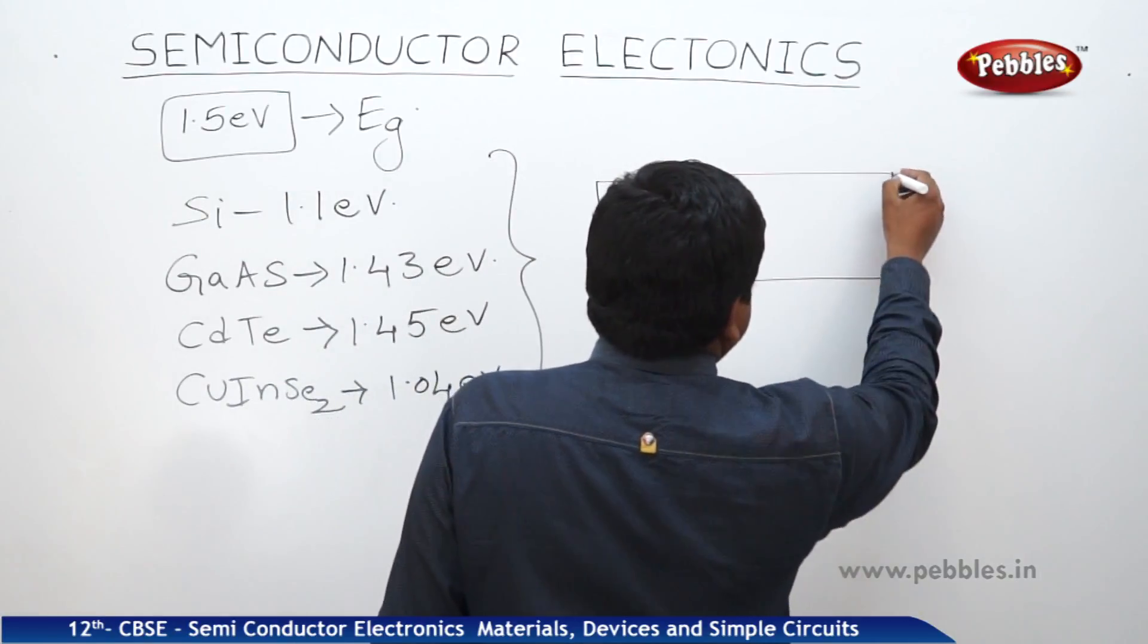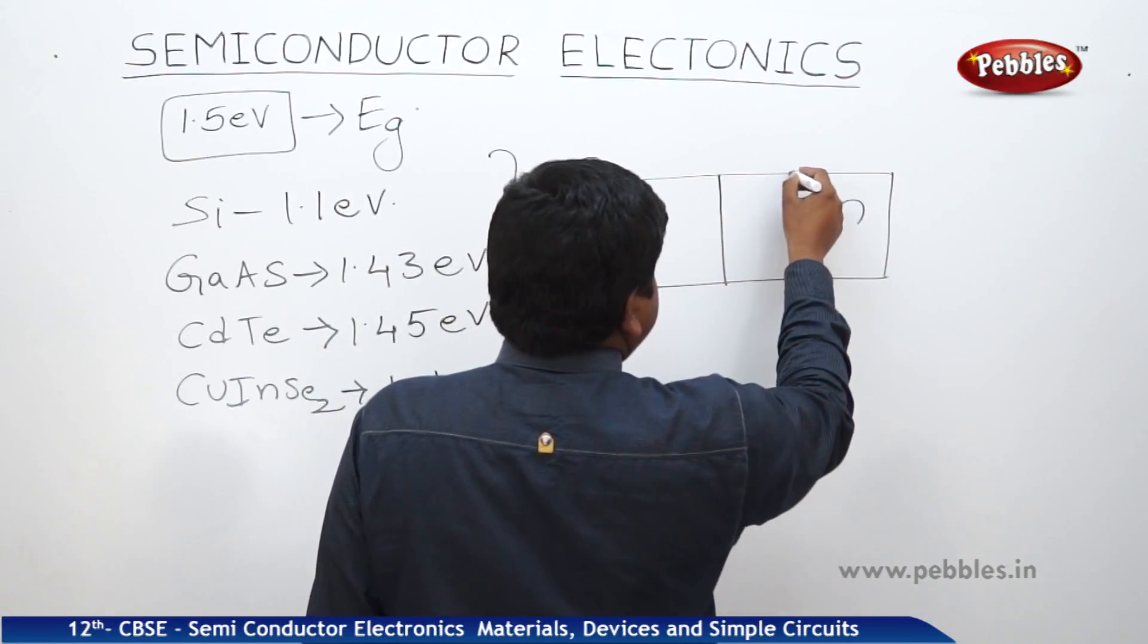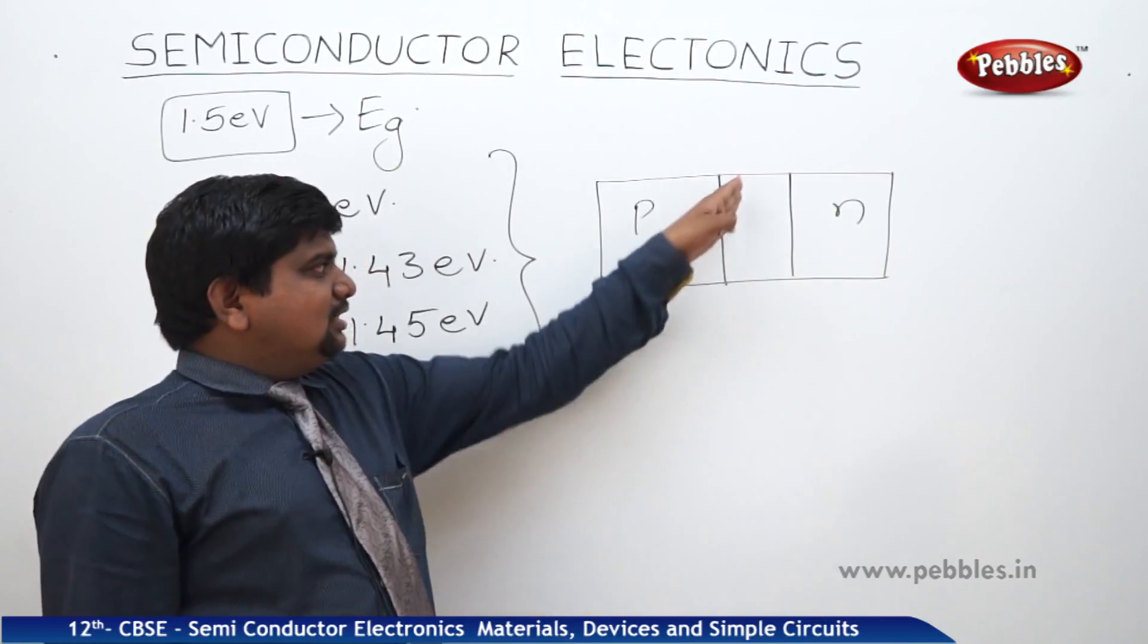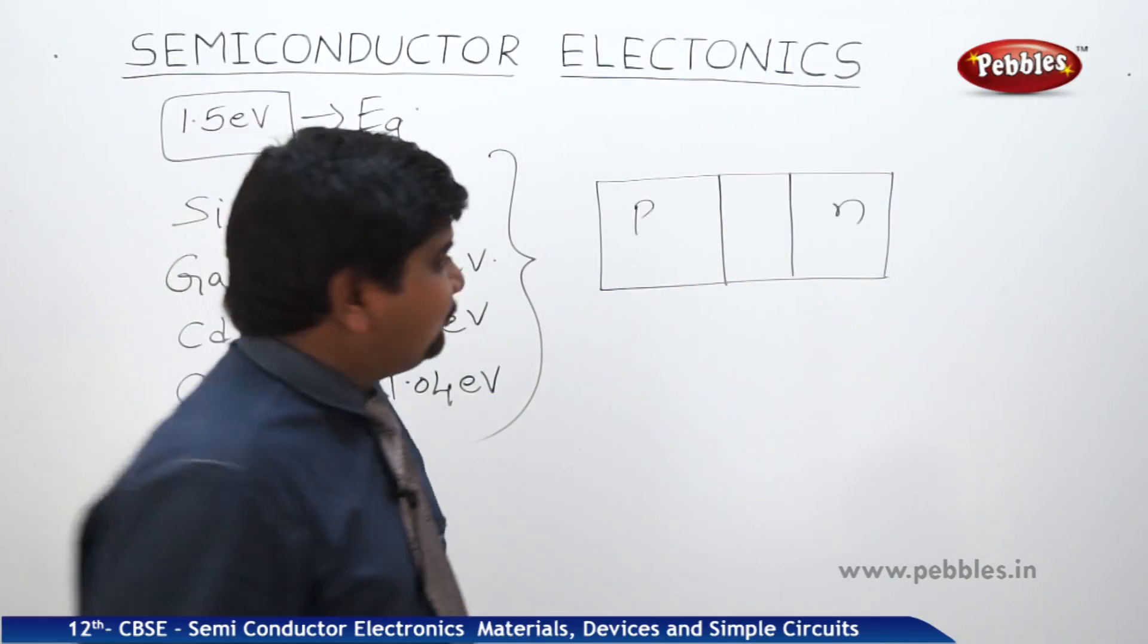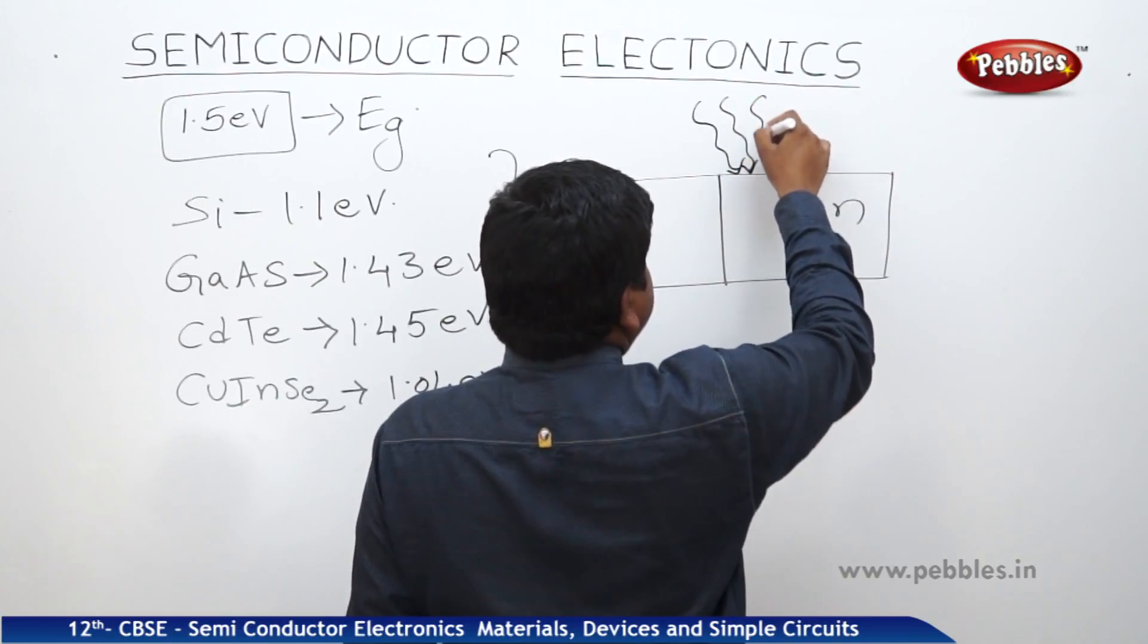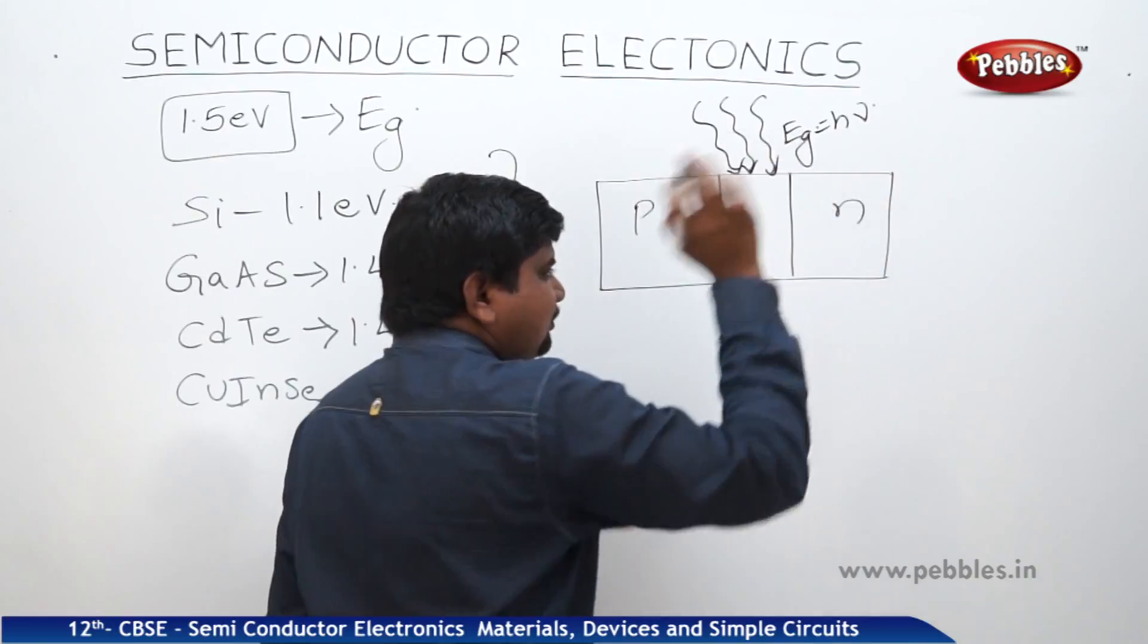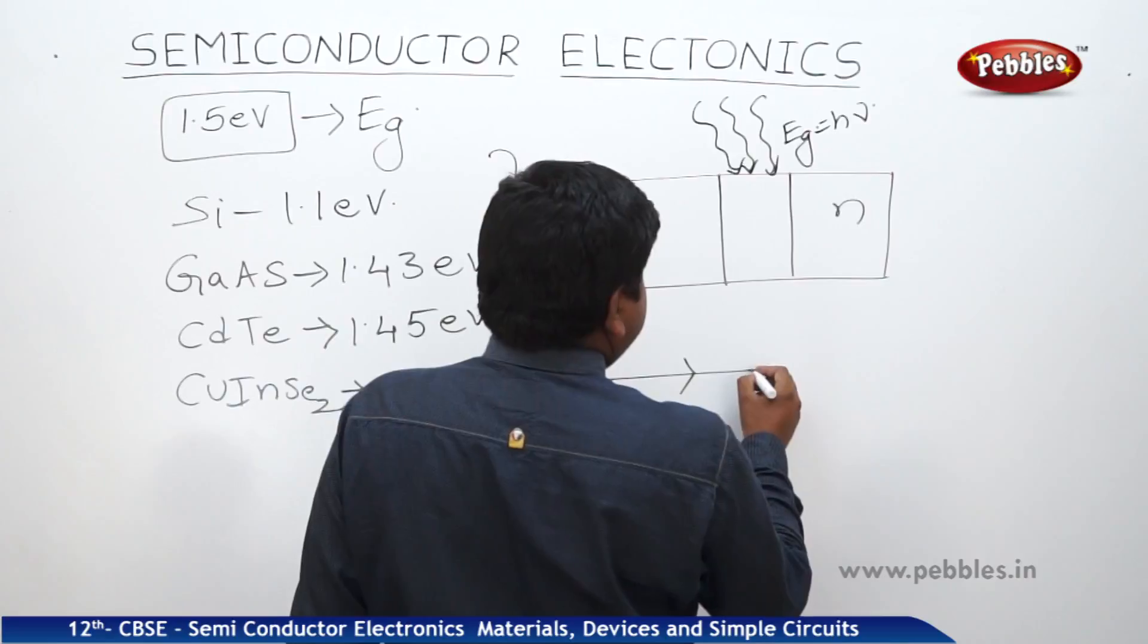This is the p-n junction, p-type, n-type and the depletion region. We are keeping the depletion region as empty because generation, separation, collection, all are taken place. That is why there will be no charge carriers in the depletion region. That is why we are keeping that one as empty. So, this is the radiation which has the energy of greater than Eg, nothing but the HNU. So, p-type, n-type and it will be like this.